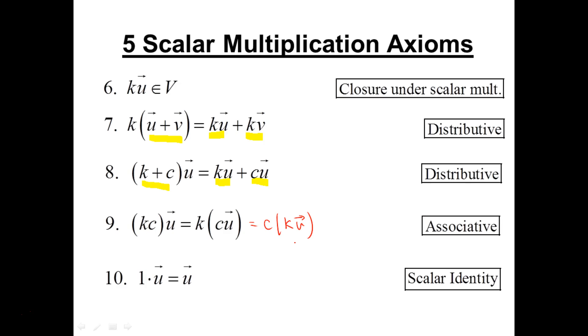We have five addition axioms and five scalar multiplication axioms. And I just want you to notice that there is no axiom about a multiplicative inverse. We had an additive identity and an additive inverse, but we just have a scalar identity, a multiplicative identity. We do not have as an axiom a multiplicative inverse. So those are the ten axioms that define a vector space.